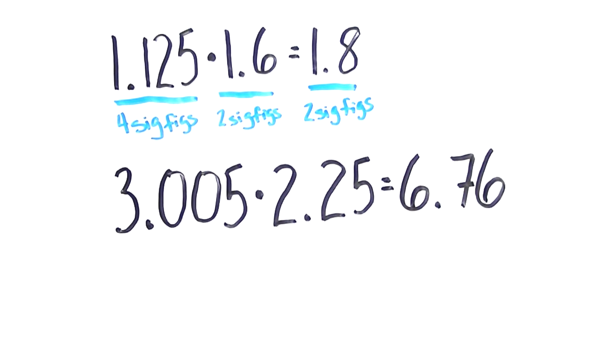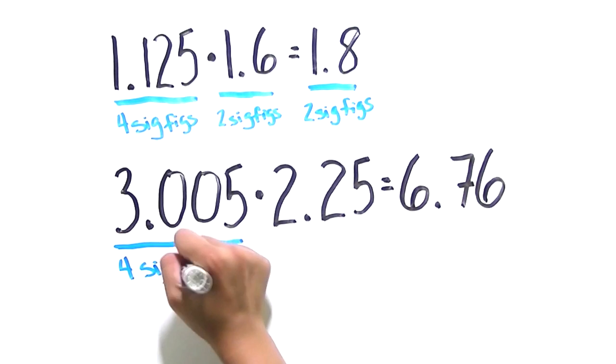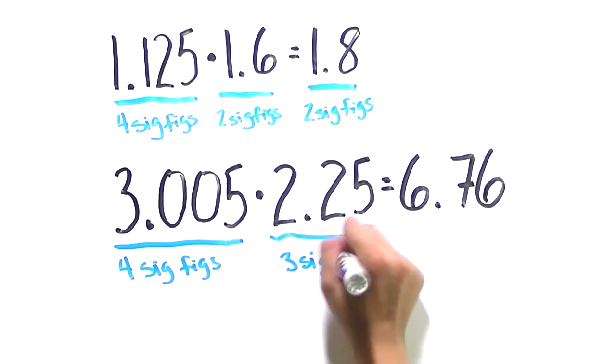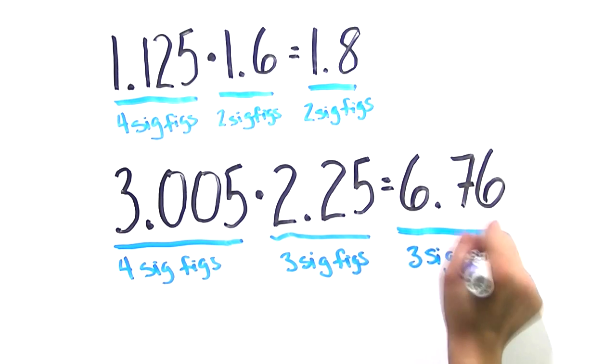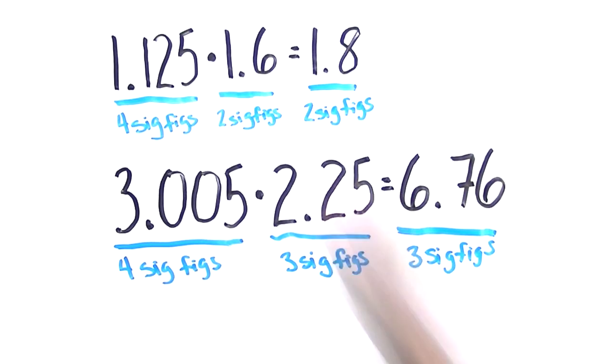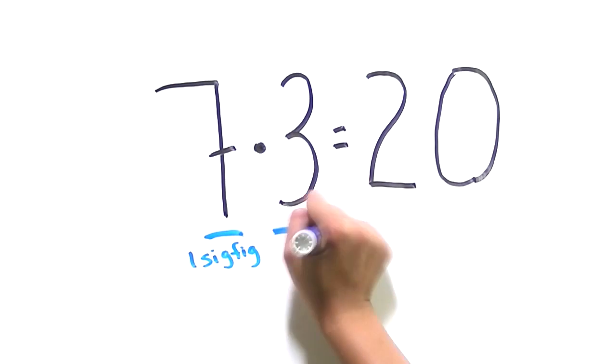By this principle, 1.125 times 1.6 equals 1.8, 3.005 times 2.25 equals 6.76, and 7 times 3 equals 20?